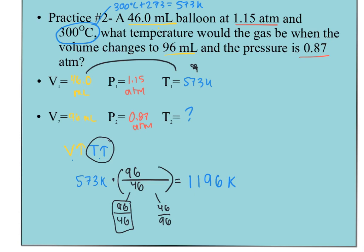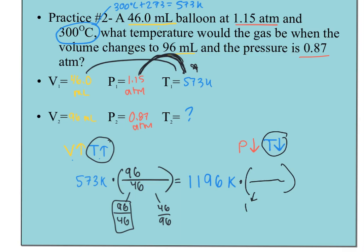Now let's look at pressure with temperature — temperature is always the focus since that's our unknown. Pressure is going down from 1.15 to 0.87 atm. Pressure and temperature have a direct relationship, so if pressure decreases, temperature needs to go down too — fewer collisions means particles are moving slower. To make temperature go down, I choose 0.87 on top and 1.15 on the bottom. Taking 0.87 divided by 1.15 gives 0.757, times 1196 gives my new temperature.